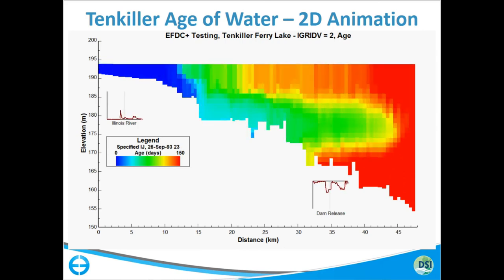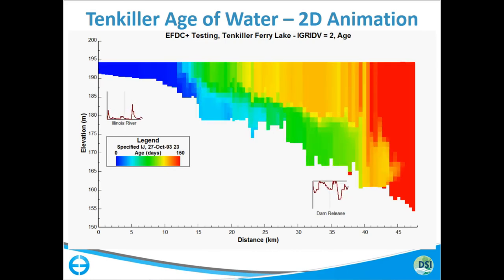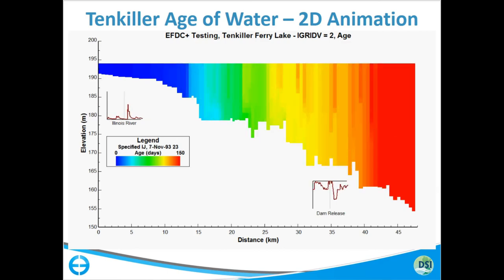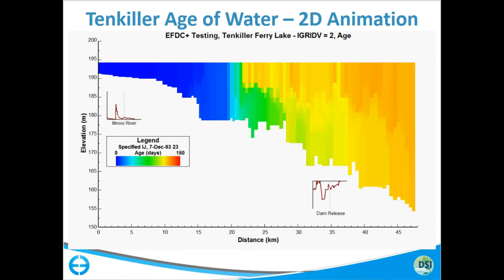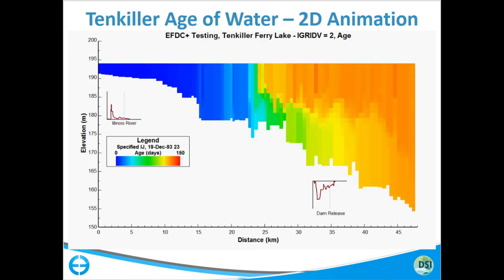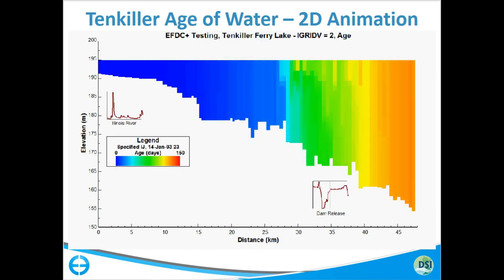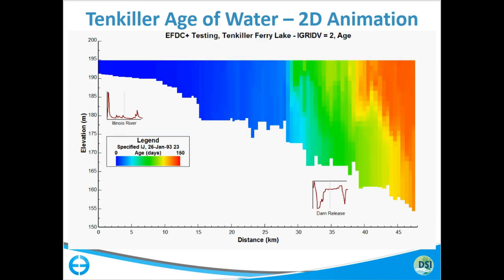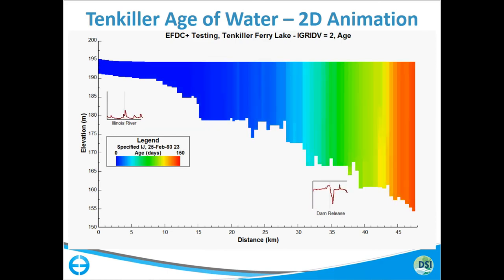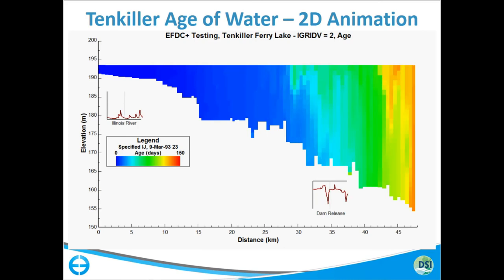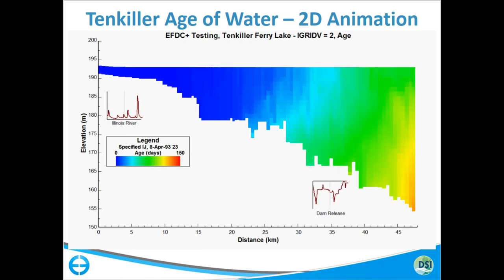Right there — a slug of colder water came in and basically displaced the older water. You had older water above and older water below, and there you had a nice density current kind of following the bottom. That age constituent — we did it with W2 and then added it here because it was so useful for looking at these dynamics.